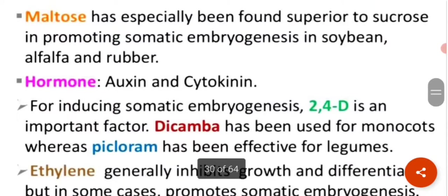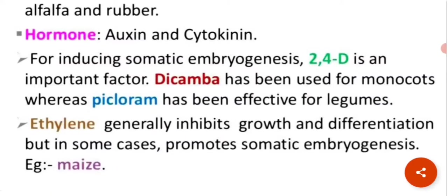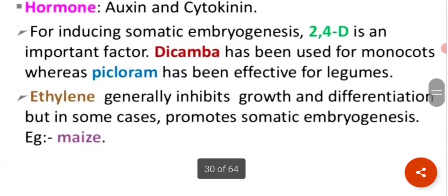Hormones — auxin and cytokinin — are important. For inducing somatic embryogenesis, 2,4-D is an important factor. Dicamba has been used for monocots, whereas picloram has been effective for legumes. Ethylene generally inhibits growth and differentiation, but in some cases promotes somatic embryogenesis, like in the case of maize.